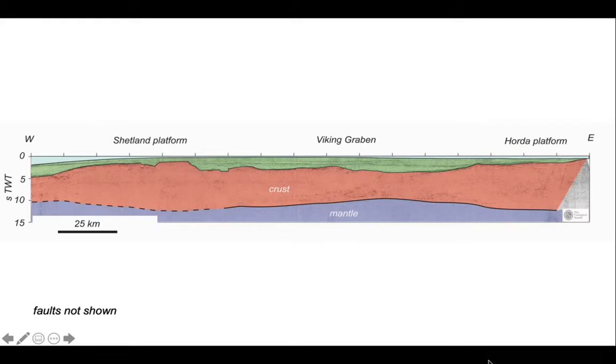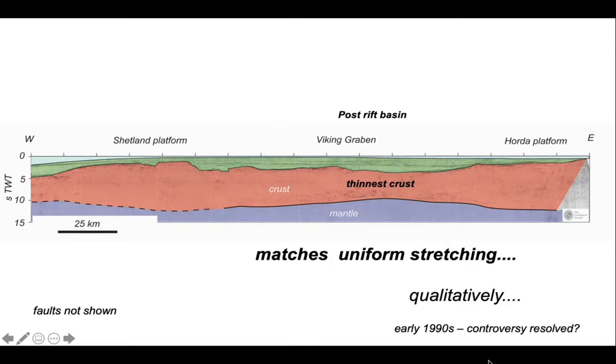Here's the Moho, the mantle underneath it, the crust in pink above, and the sedimentary units on top shown in green. We can see that the Viking Graben contains a thick part of sediments that represents the post-rift basin, and it overlies the thinnest crust. Therefore, this matches uniform stretching. The post-rift basin, which is charting the mantle stretching, overlies the thinnest crust, which is where the crust has stretched. So both have stretched one on top of the other.